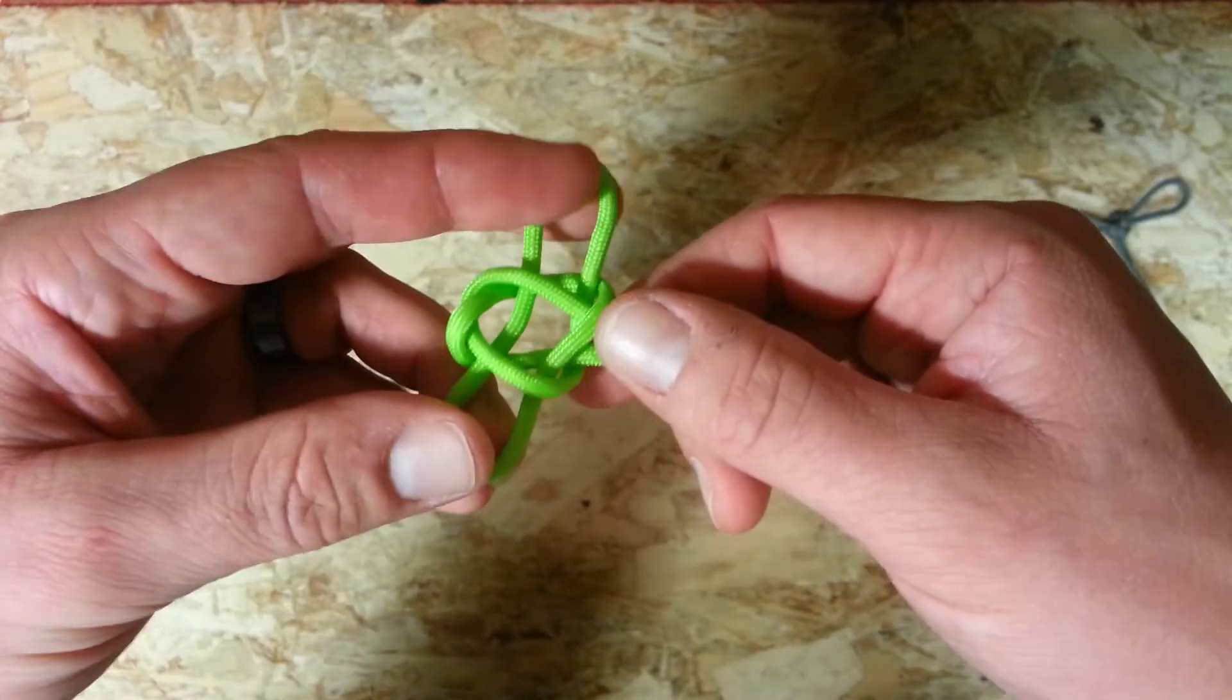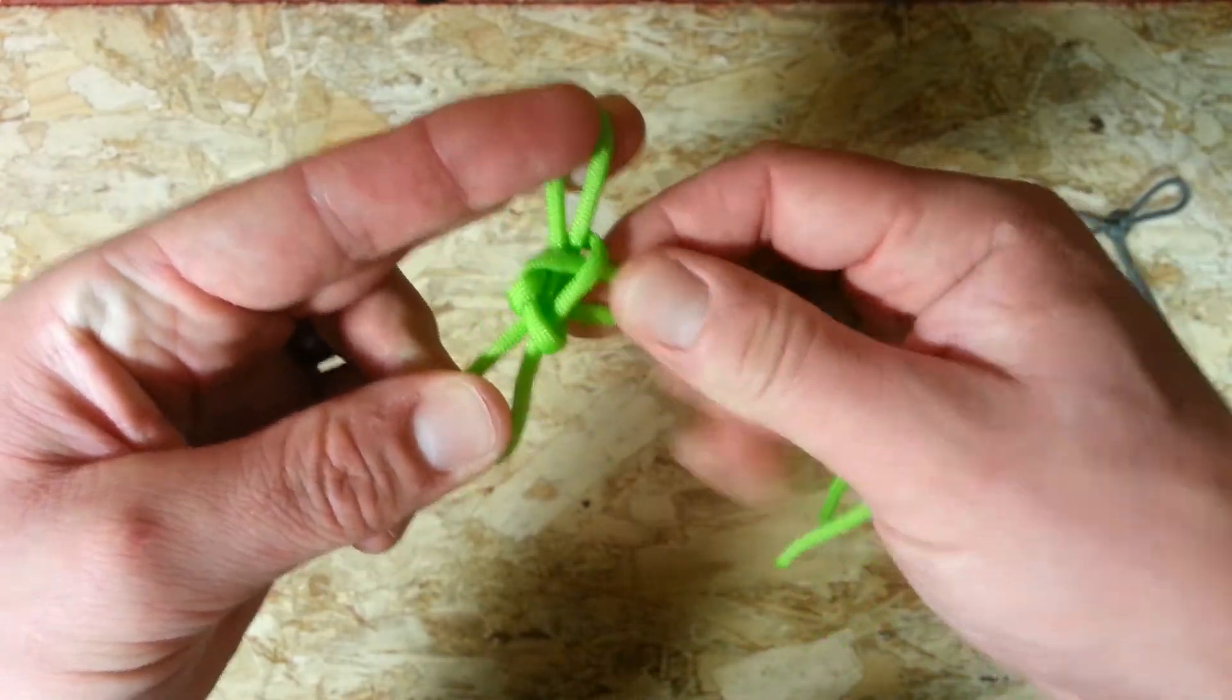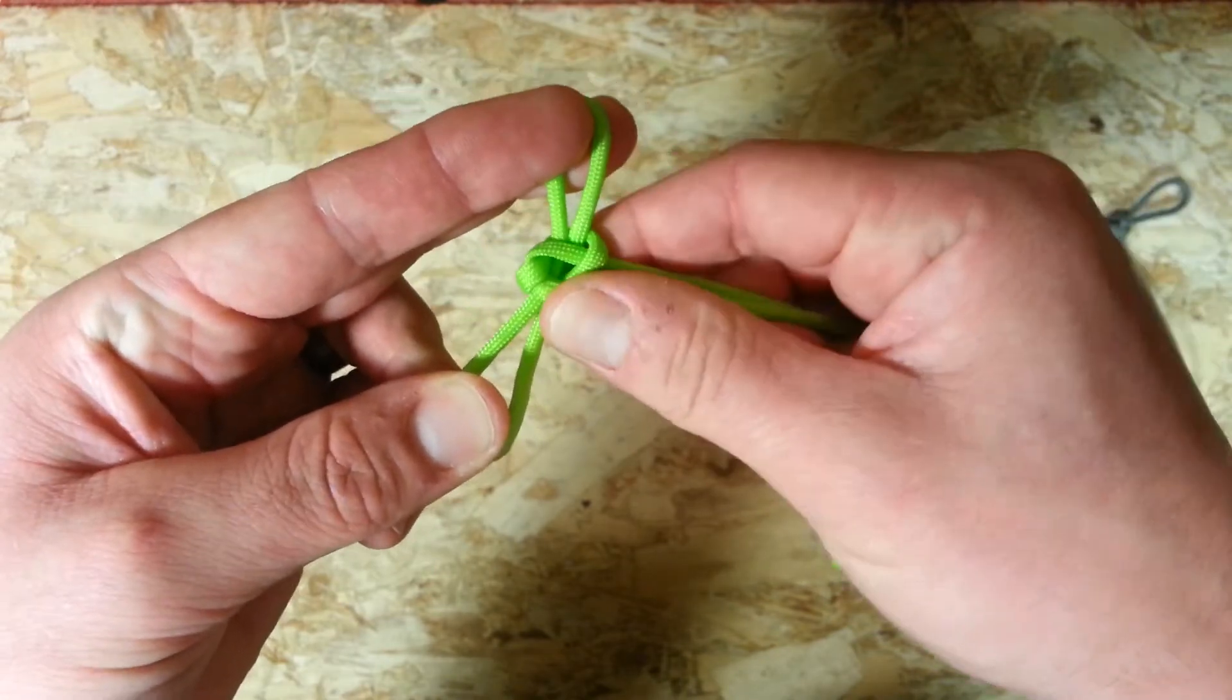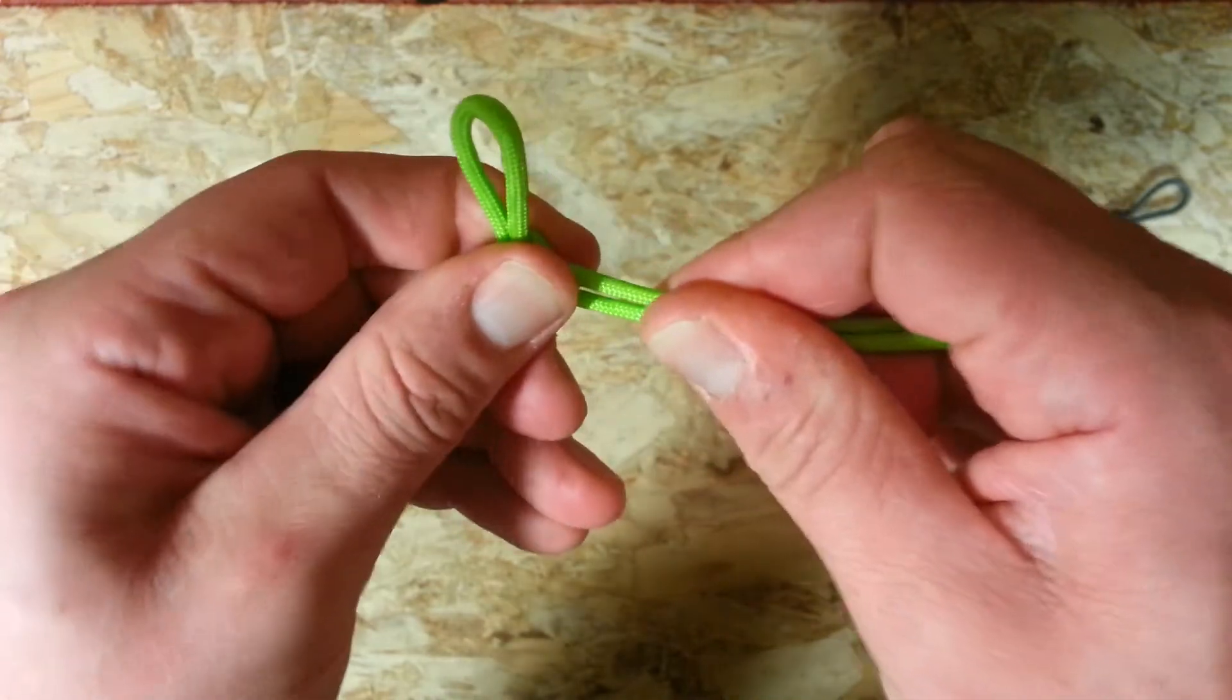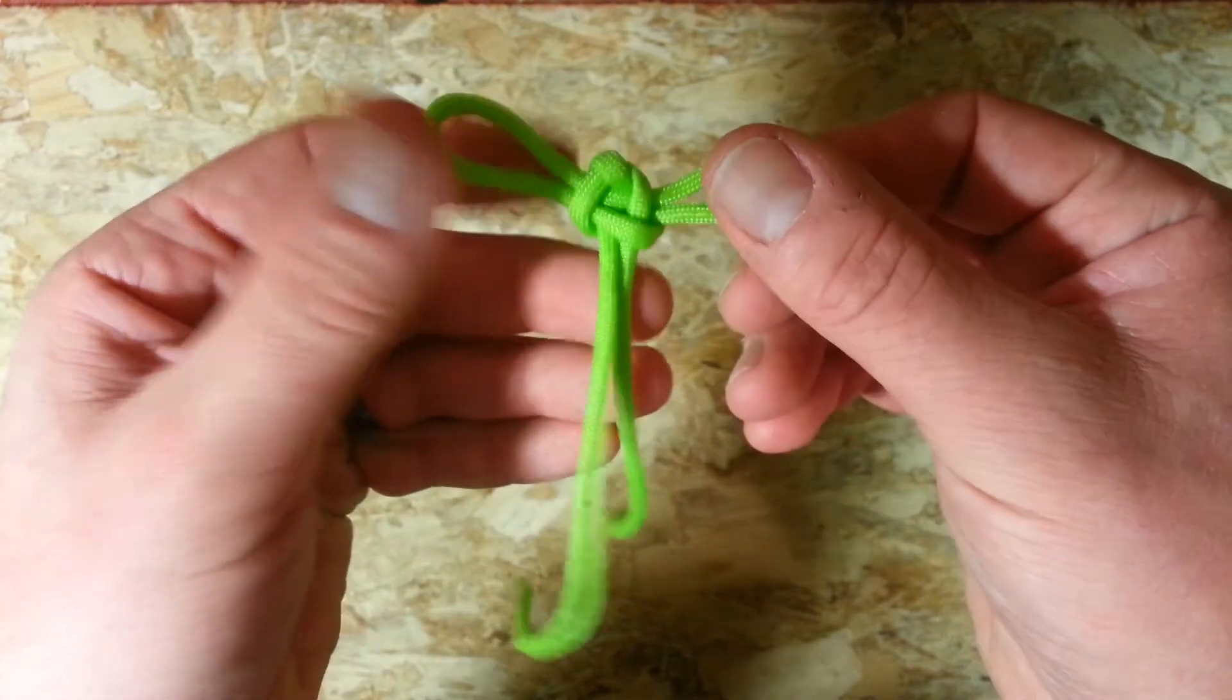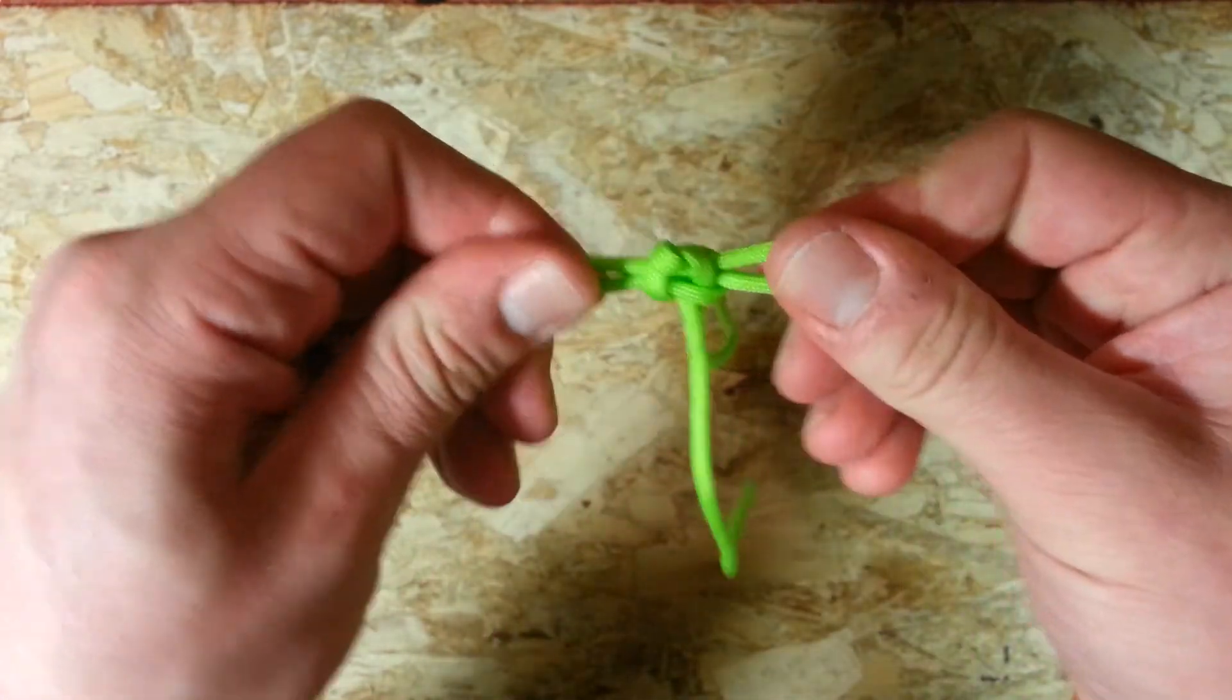And once you have that, just keep hold of both ears of your bow. And you can just basically push up on the middle, pulling out in these cords. Push that in from the sides until it all cinches up. Once you get it fairly tight, you can adjust your bow again. And then give it a final tighten up.